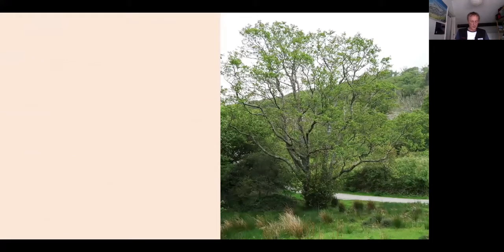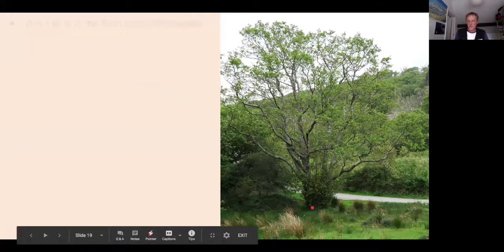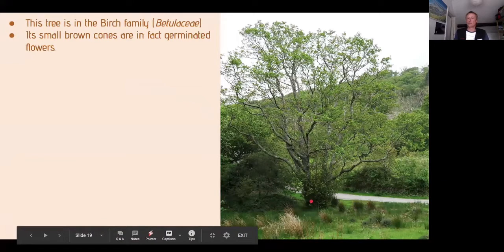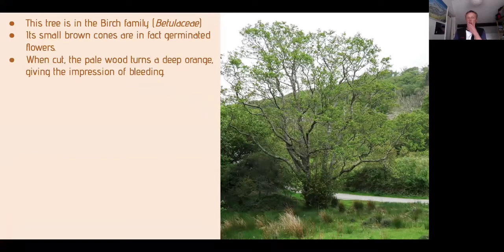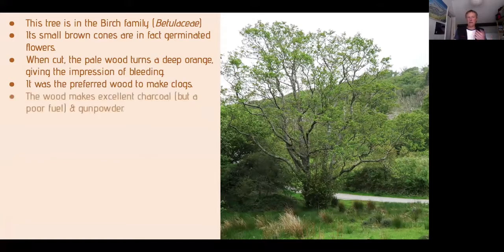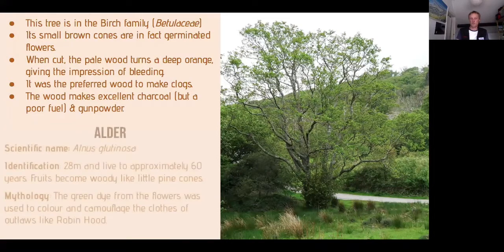Moving to the birch family — about 160 species of birch. This one likes wet conditions and sends up shoots from the base. It has small brown cone-like flowers. When cut, the wood turns a deep orange and can be used to create various dyes. The wood is very hard and rot-resistant, good for making clogs. It makes excellent charcoal — when water and oils are driven out, it burns at a very high temperature. It is alder — 28 meters tall, lives to about 60 years, with the scientific name glutinosa because the young twigs are sticky.